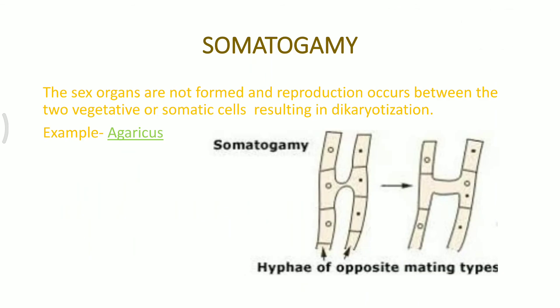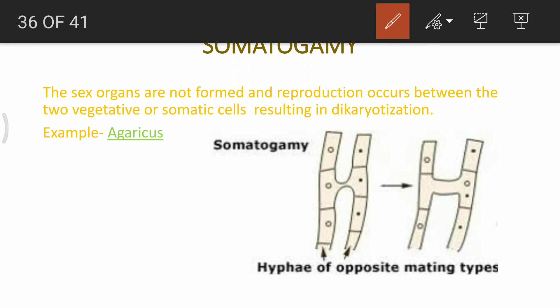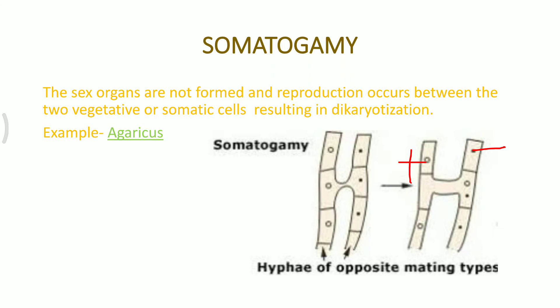Somatogamy is the last category of sexual reproduction, where sex organs are not formed. Just two vegetative or somatic cells are present together in a dicaryotization stage, as in Agaricus. You can see that two different strains are there — one is a positive strain and the dotted one is a negative strain. Both strains are present together forming a dikaryon stage. This can be seen in Agaricus, which is a deuteromycete or the most developed fungi.